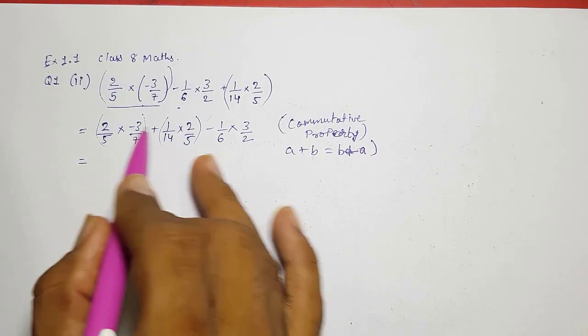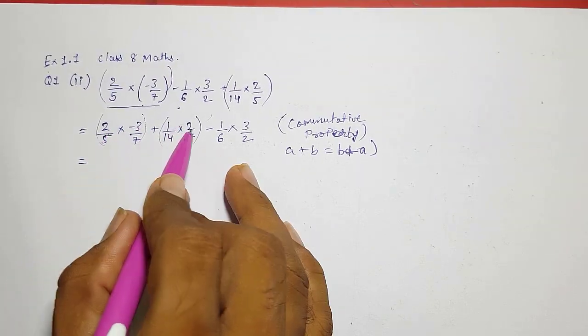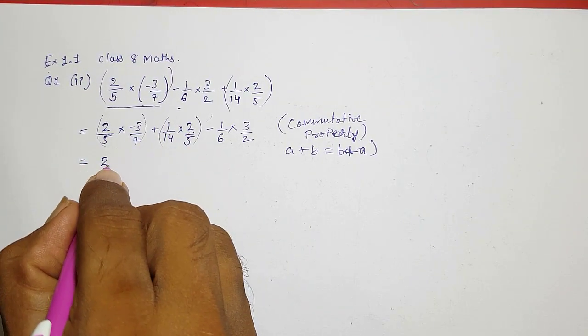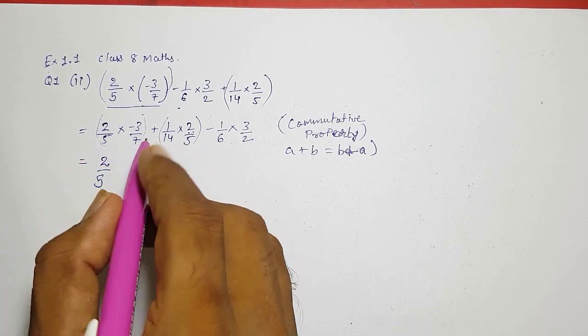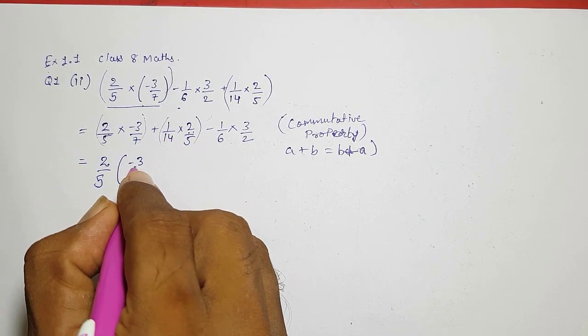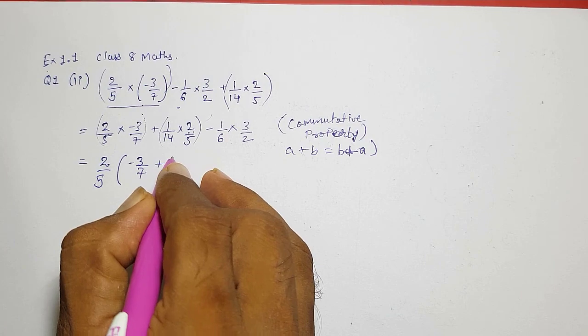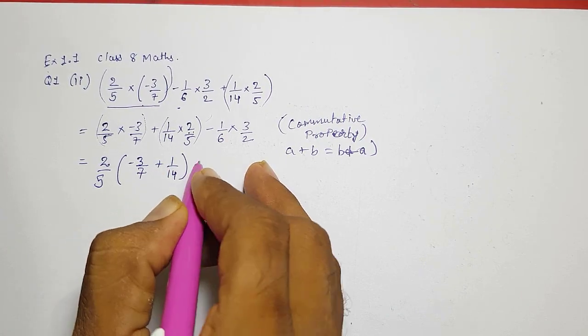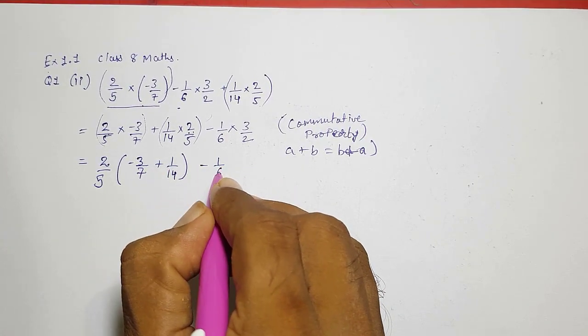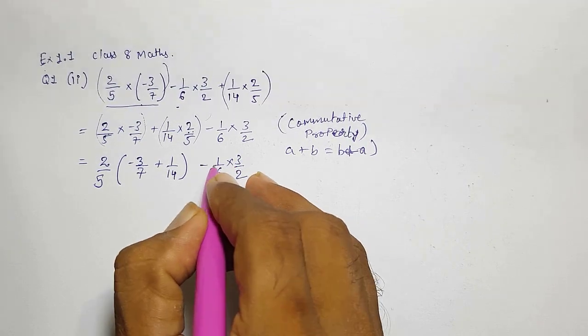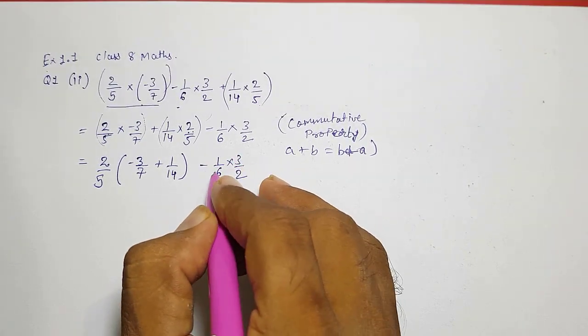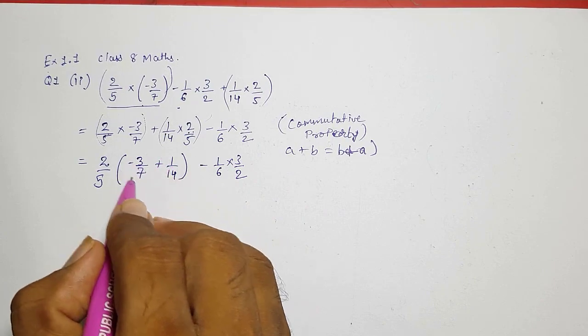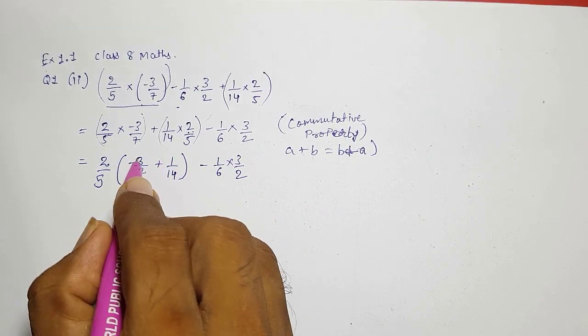Here you can see we had taken, now we are going to take this common, so that will be distributive property. 2 by 5 is there so we had taken common, then minus 3 by 7 plus 1 by 14 and then minus 1 by 6 into 3 by 2. Here into is there, directly if you want to cancel you can but we will do that later. First of all we are going to solve this bracket.